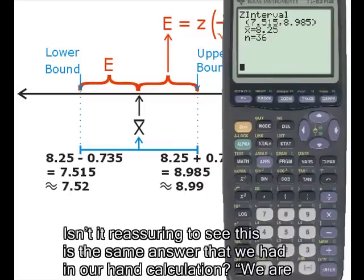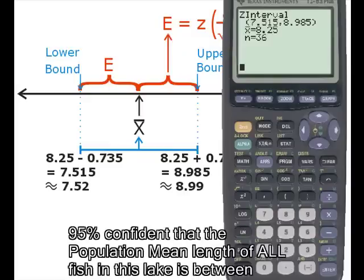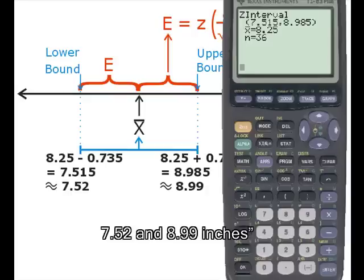Isn't it reassuring to see this is the same answer that we got in our hand calculation? We are 95% confident that the population mean length of all fish in this lake is between 7.52 and 8.99 inches.